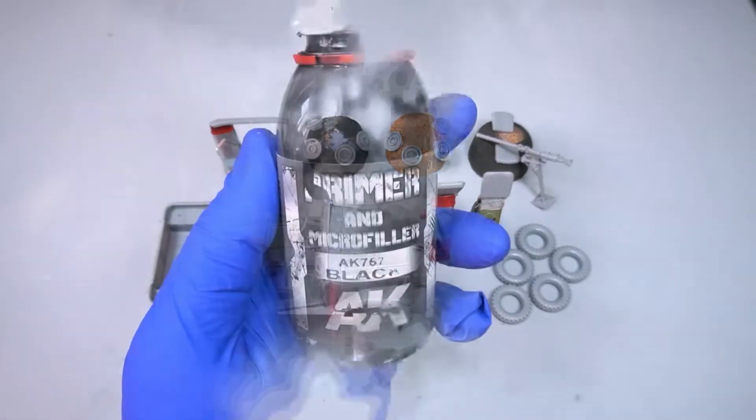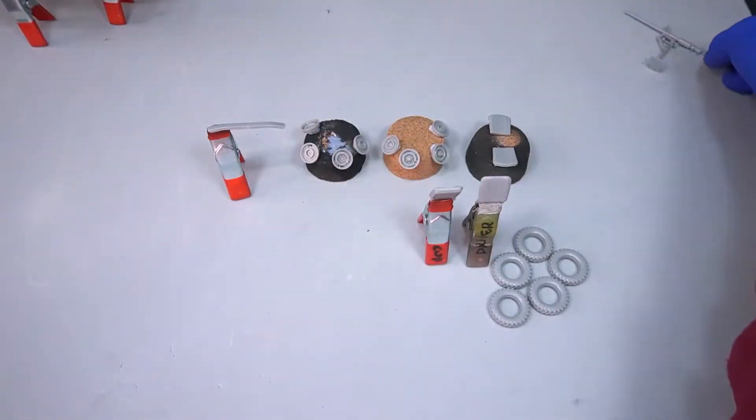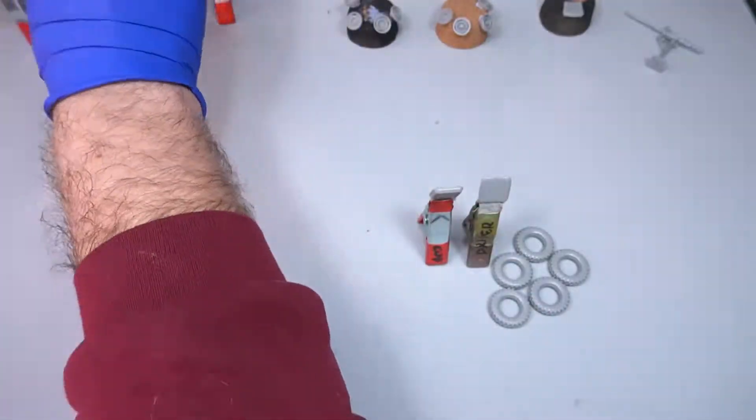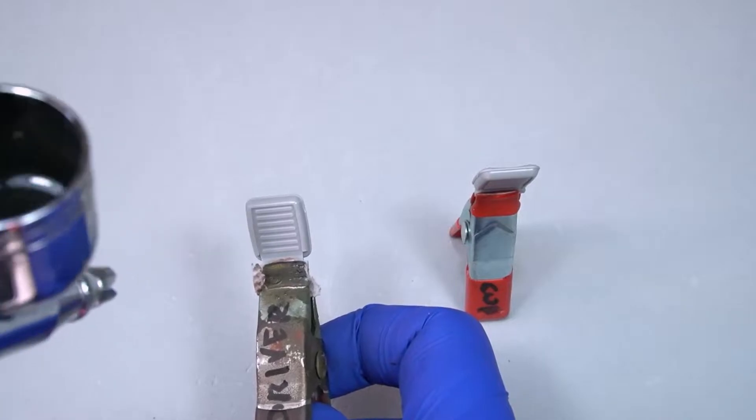Hello friends! Let me present to you the FJ43 from AK Interactive. We'll start by priming the model using the black primer and micro filler. As you can see, our model is divided into different parts and pieces.